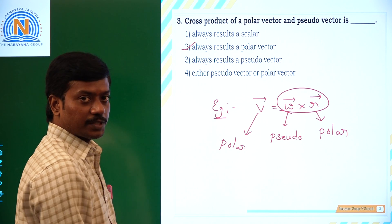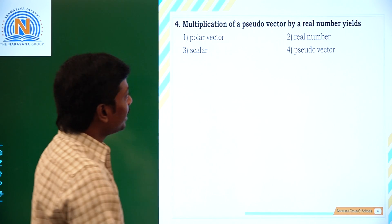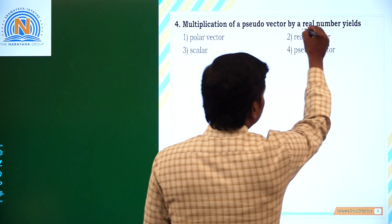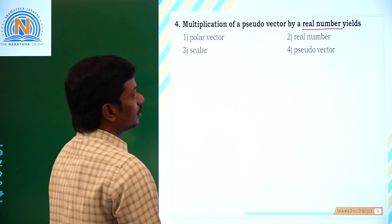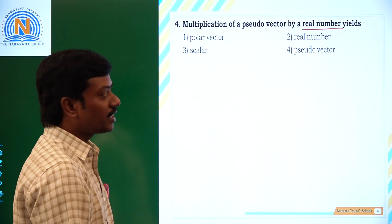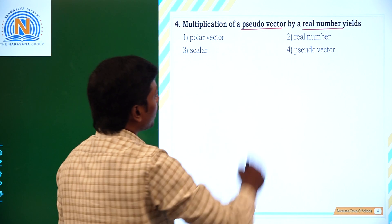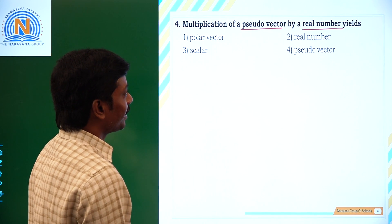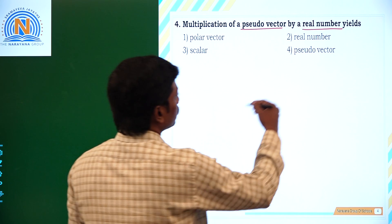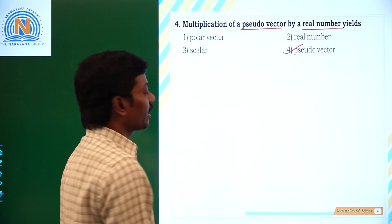So the second option is correct. Now the next question: multiplication of a pseudo vector by any real number. A real number is a scalar quantity. When you multiply a scalar and a vector, it always results in the same vector type. So when you multiply a pseudo vector by a real number, it is another pseudo vector. The answer is pseudo vector — fourth option is correct.